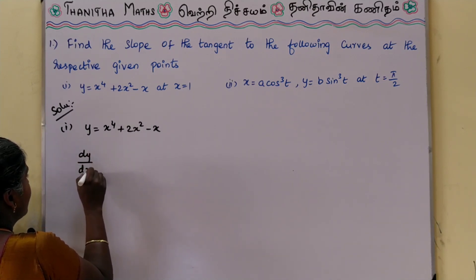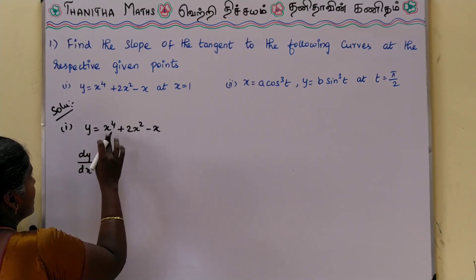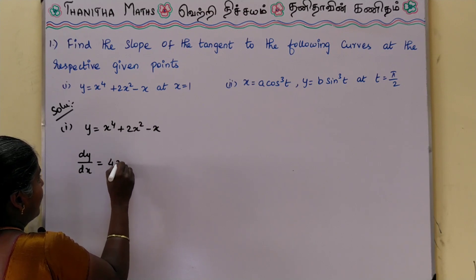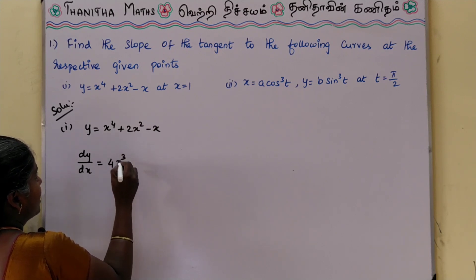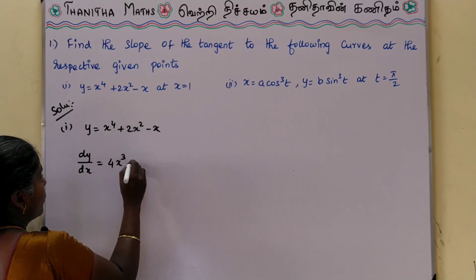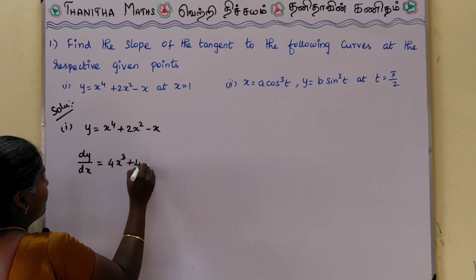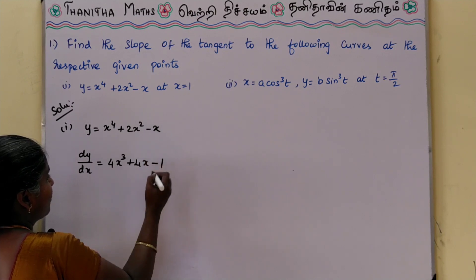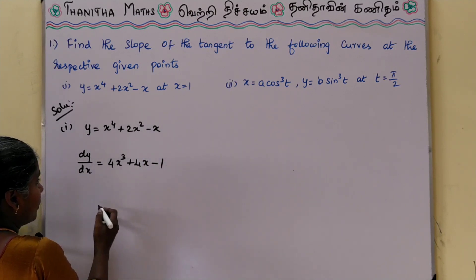dy by dx is equal to: x power 4 differentiated gives 4x cube. 2x square differentiated gives 4x. Minus x differentiated gives minus 1.